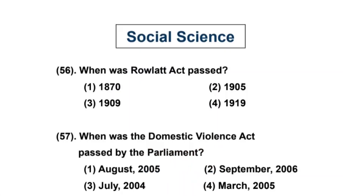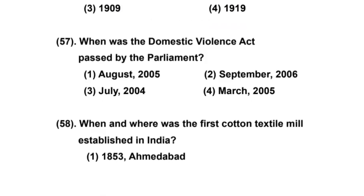Here is your first question from Social Science: When was the Rowlett Act passed? The options are: 1) 1870, 2) 1905, 3) 1909, 4) 1919. The right answer is option 4 — 1919.